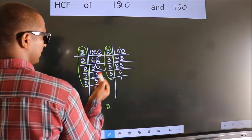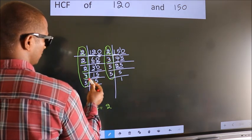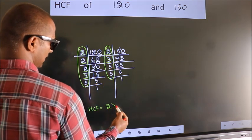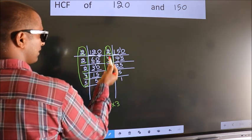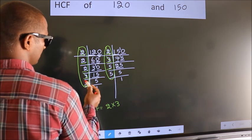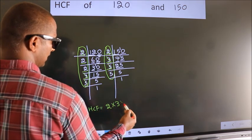Next number 3. Do we have 3 here? Yes. So cut 3 right here. Next number 5. Do we have 5 here? Yes. So cut 5 right here.